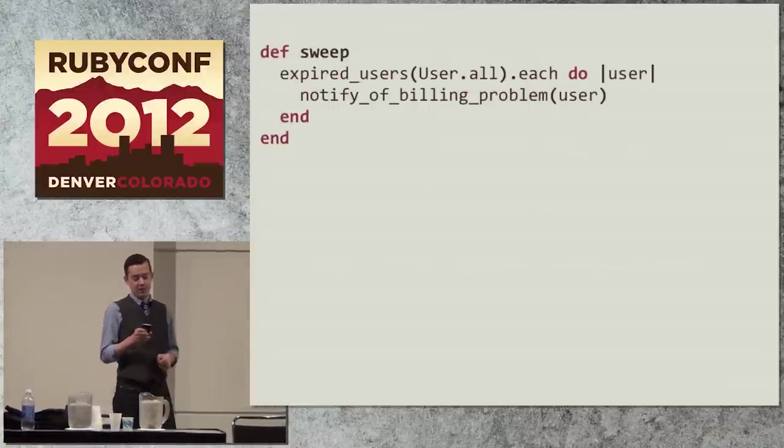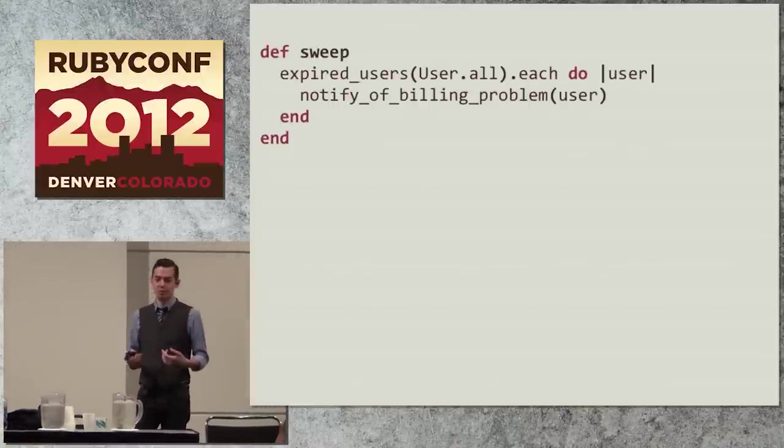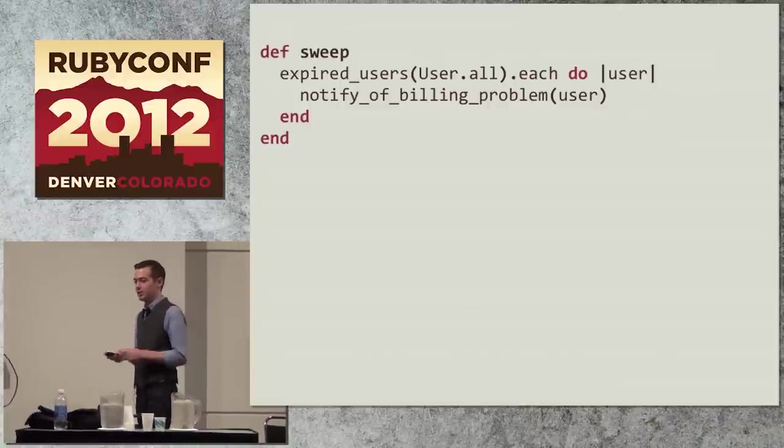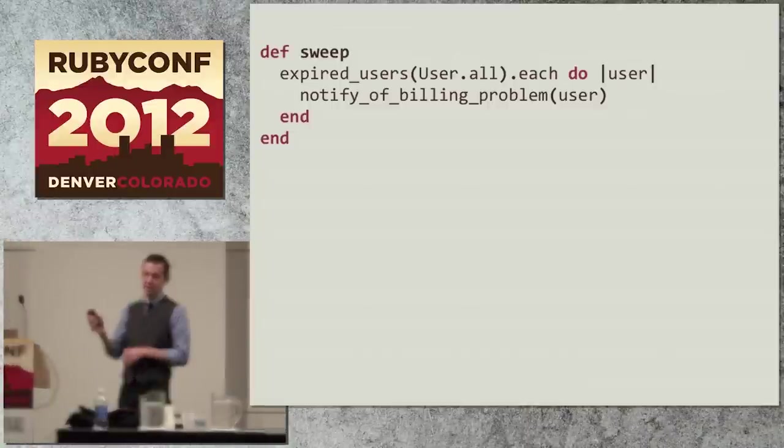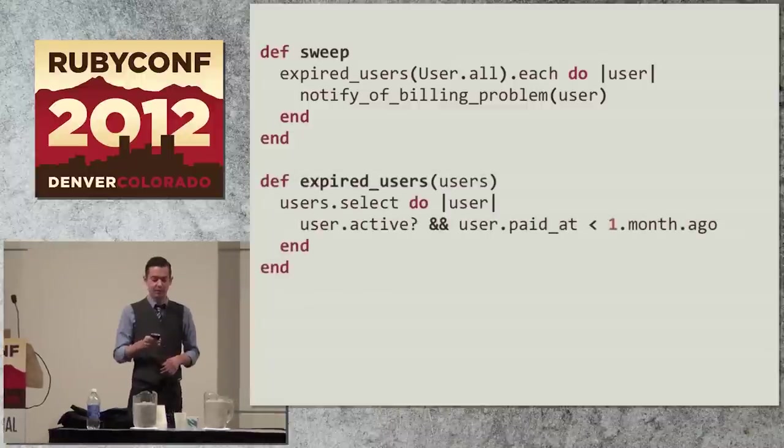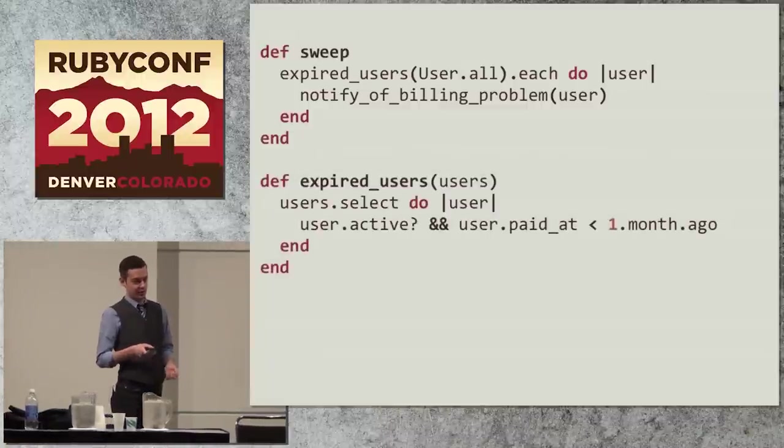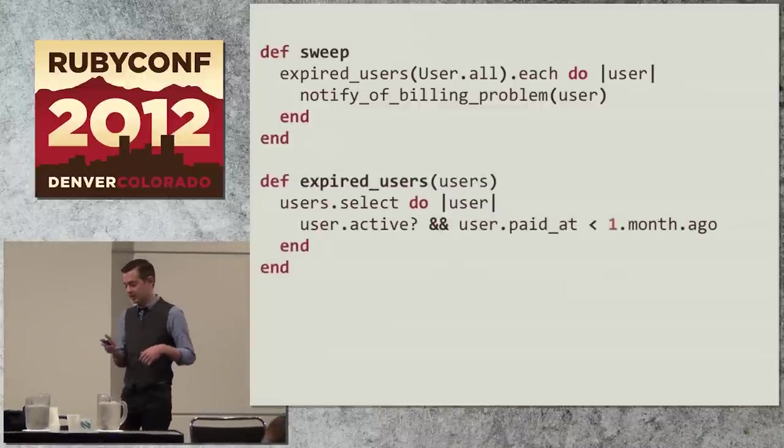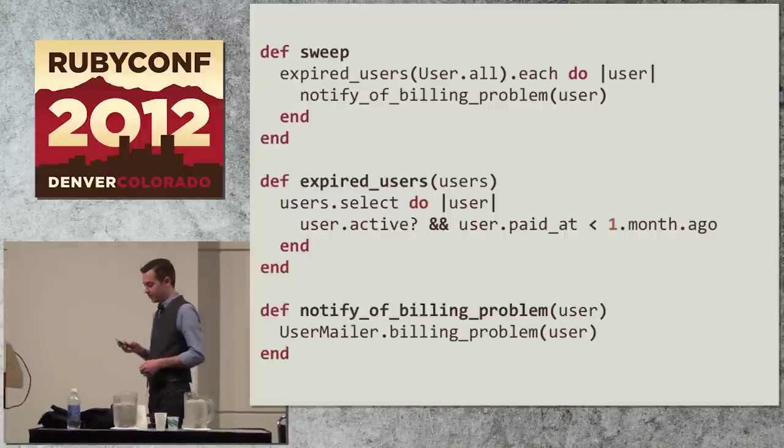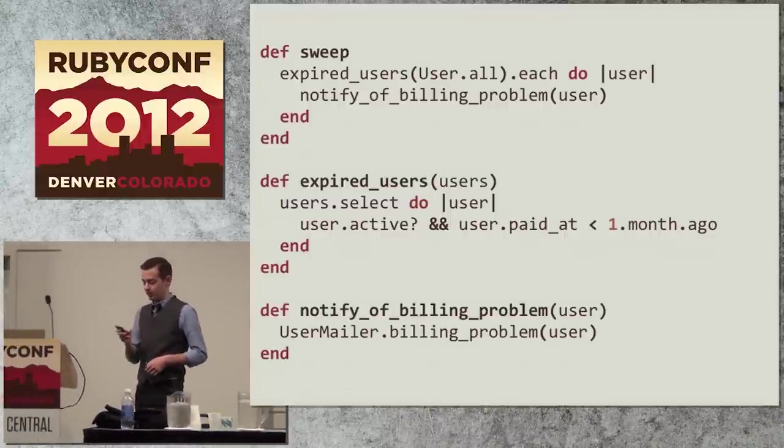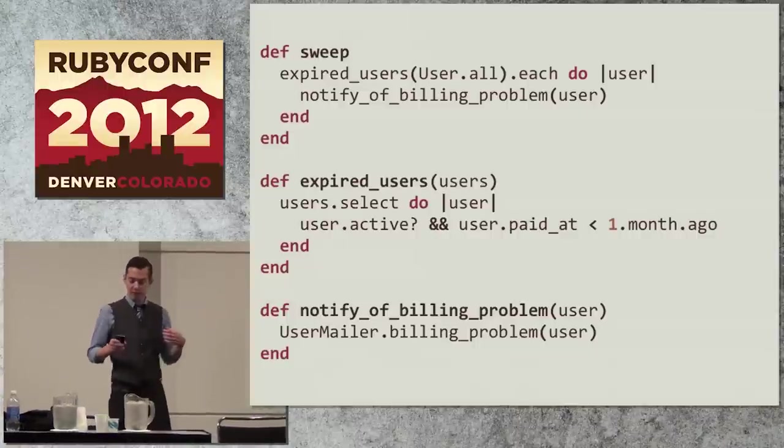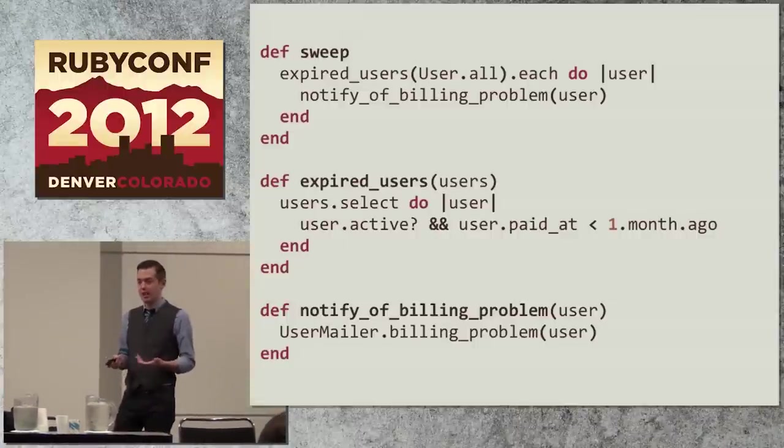The way that this relates back to functional core imperative shell, to foe-o, to the idea of having lots of values, is that every value in your system is a potential message, a possible message between two processes. Every value that is struct-like and can be easily serialized can also be easily sent over the wire. And this is a special case of the value is the boundary between the components. So if we rewrite our sweeper in a slightly different way, so we have a sweep method. It calls expired users on user.all, so it pulls everything out of the database, finds only the expired ones, and then for each of those emails, this is the imperative shell that you're looking at right now. The functional core is the expired users class.